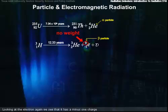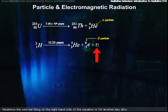Looking at the electron again, we see that it has a minus-1 charge, and given that, our rule about conserving charge and mass number is kept. Neutrinos, the new bar thing on the right-hand side of the equation, is for another day also, but it has no charge and essentially no mass, even compared to an electron, so we can gleefully ignore it for now.